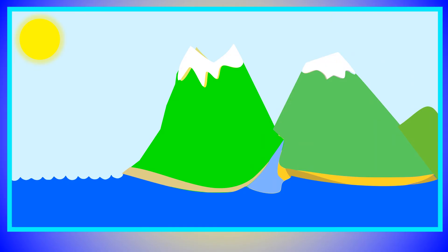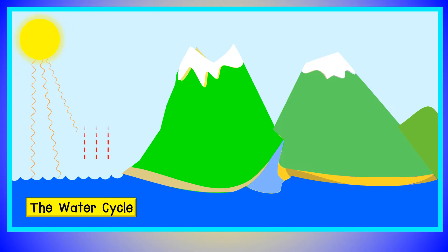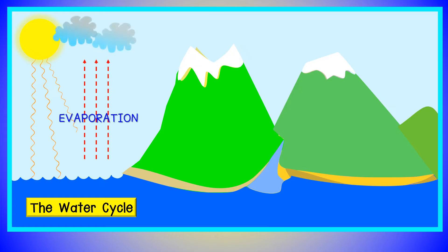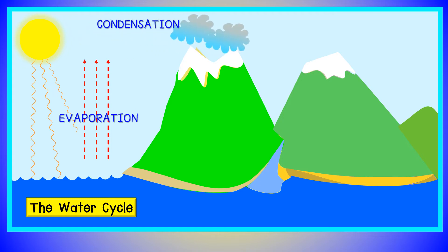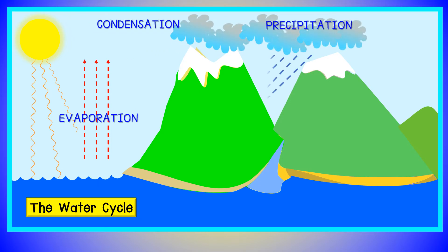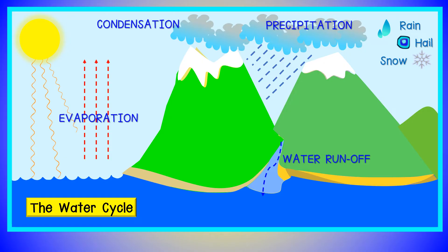The water on planet Earth has existed for millions of years and goes through what is called the water cycle. Water in oceans, lakes and rivers exists in a liquid state. The Sun heats the water, which evaporates and becomes water vapor. The vapor cools high in the atmosphere and condenses to form water drops, which form clouds. The clouds move over land, the drops grow larger and fall as precipitation — rain, hail, or snow. The water flows into rivers and eventually enters the ocean as water runoff, and the cycle begins again.